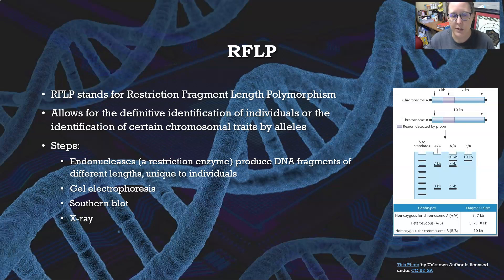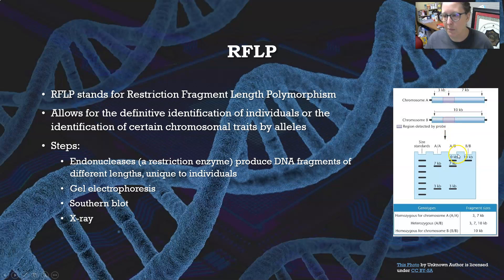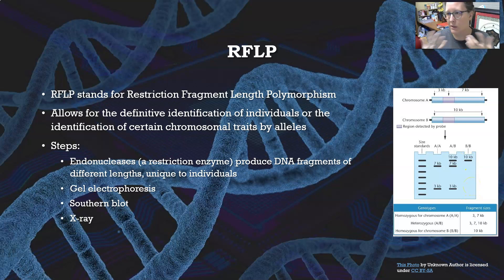You then separate the fragments through gel electrophoresis — they migrate in the gel in a certain pattern. A Southern blot and incubation with markers allows you to visualize the bands on X-ray. For example, if testing for trait A versus trait B: if homozygous for trait A, you see that pattern only; if heterozygous A/B, you see the pattern for both A and B; if homozygous for B, you see the B pattern only. That's how you determine if someone is homozygous or heterozygous for certain traits.